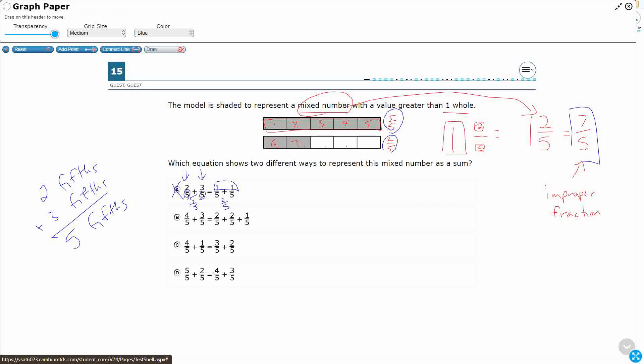Alright, so let's check this one. B, four fifths and three fifths. Well, four fifths and three fifths are going to make seven fifths. Alright, that looks good.